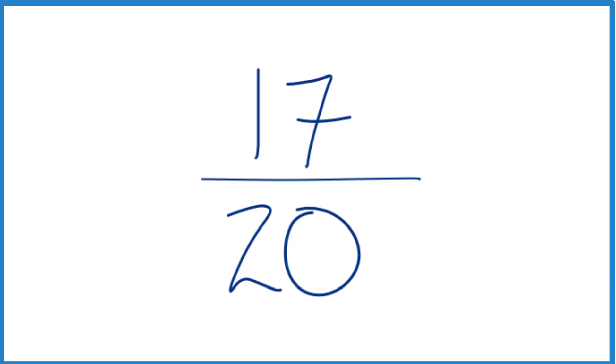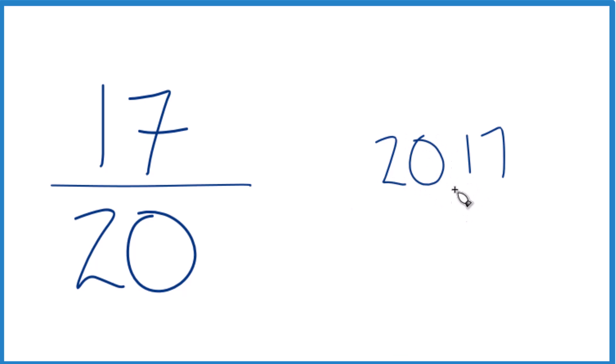You could take 17, see how many times 20 goes into 17. It doesn't go into 17, but we could call this 170 if we put a zero and a decimal point up here.